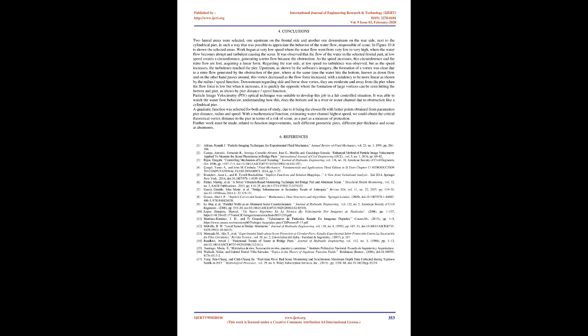The PIV optical technique was suitable for this lab-controlled experiment, allowing observation of water flow behavior and understanding how it erodes the bottom soil of a river or water channel due to obstruction by a cylindrical pier. A quadratic function was selected for both study areas as the closest fit, with parameters of pier distance, radius, and speed. Using the mathematical function estimating the water channel's highest speed, we could obtain the critical theoretical vortex distance to the pier in terms of scour risk as a protective measure. Further work must be done related to function improvements such as different geometric piers, different pier thicknesses, and scour at abutments.